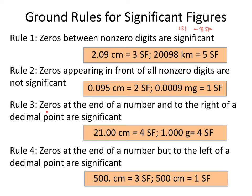Rule three: zeros at the end of the number and to the right of a decimal point are going to be significant. These zeros here are at the end of the number and to the right of the decimal point, so they count as significant — one, two, three, four — so four sig figs. Same thing here: zeros are to the right of the decimal and at the end of the number, so once again four sig figs.